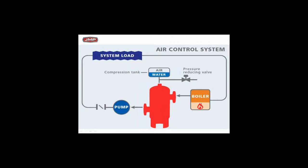In this system you've got a makeup valve, a pressure reducing valve, an expansion tank, and an air troll. You're pumping away from the system and you want the hottest water you can get in there. In this case, the boiler water goes into the air separator — that's the air control system.